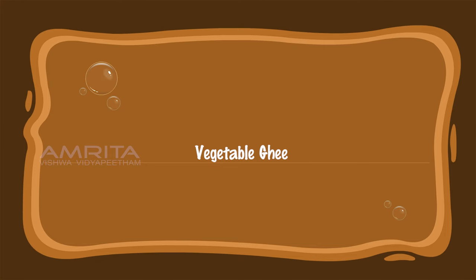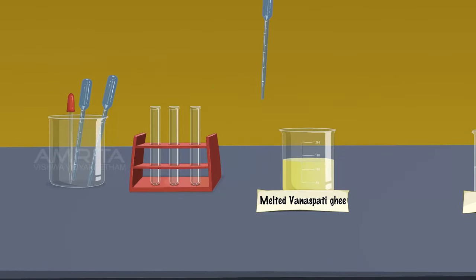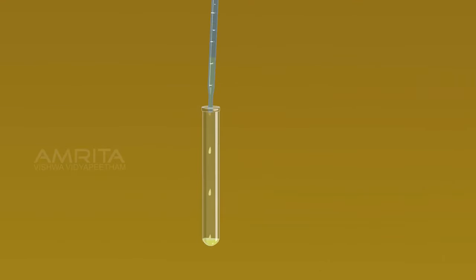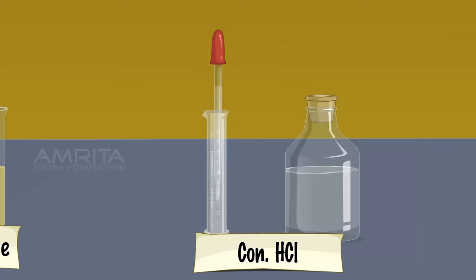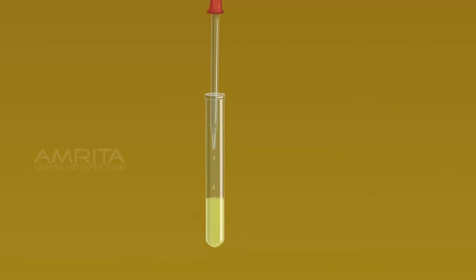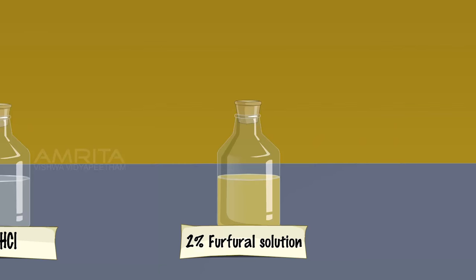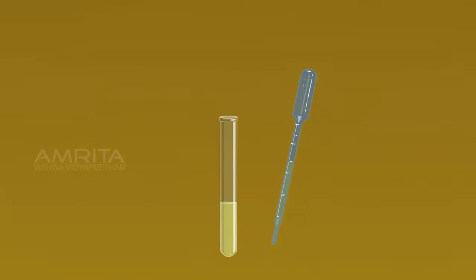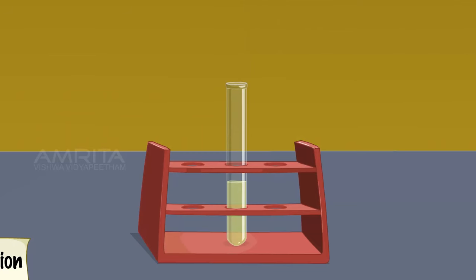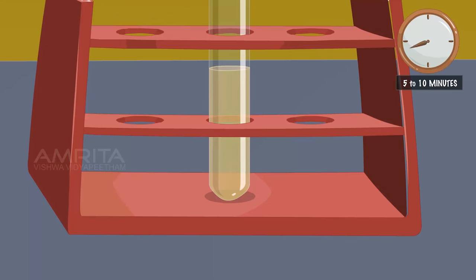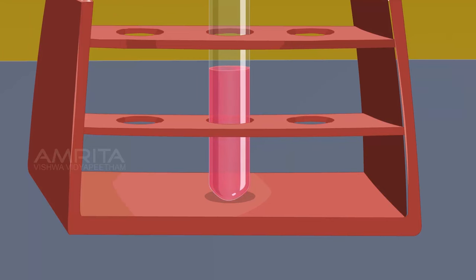Baudouin Test — Vegetable Ghee. Using a dropper, take a small quantity of melted vanaspati ghee in a test tube. Using another dropper, add 5 ml concentrated hydrochloric acid into the test tube. Then add about 3 drops of 2% furfural solution into the test tube. Keep it aside for 5-10 minutes. A rose red colour appears, indicating that vanaspati ghee contains sesame oil.